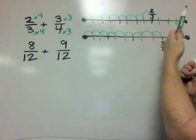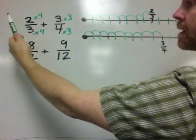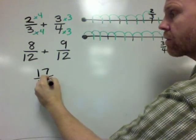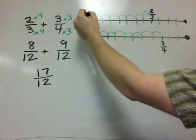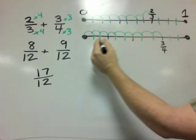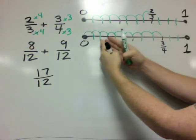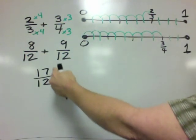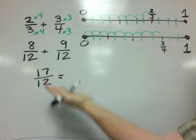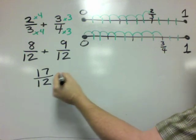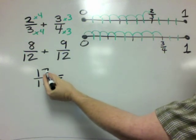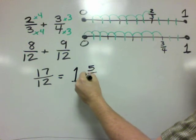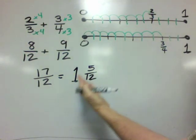Now that everything is the same-sized intervals, we can add. So 8 twelfths plus 9 twelfths is equal to 17 twelfths. Now, if this is 0 and this is 1, we can see that 1 whole is 12 units — or 12 little fractional pieces, so 12 twelfths. If we have 17 twelfths, that's definitely more than 1 whole. If we have 17 pieces and it takes 12 pieces to make 1 whole, we have 1 whole plus 5 pieces left over. So the answer is 1 and 5 twelfths.